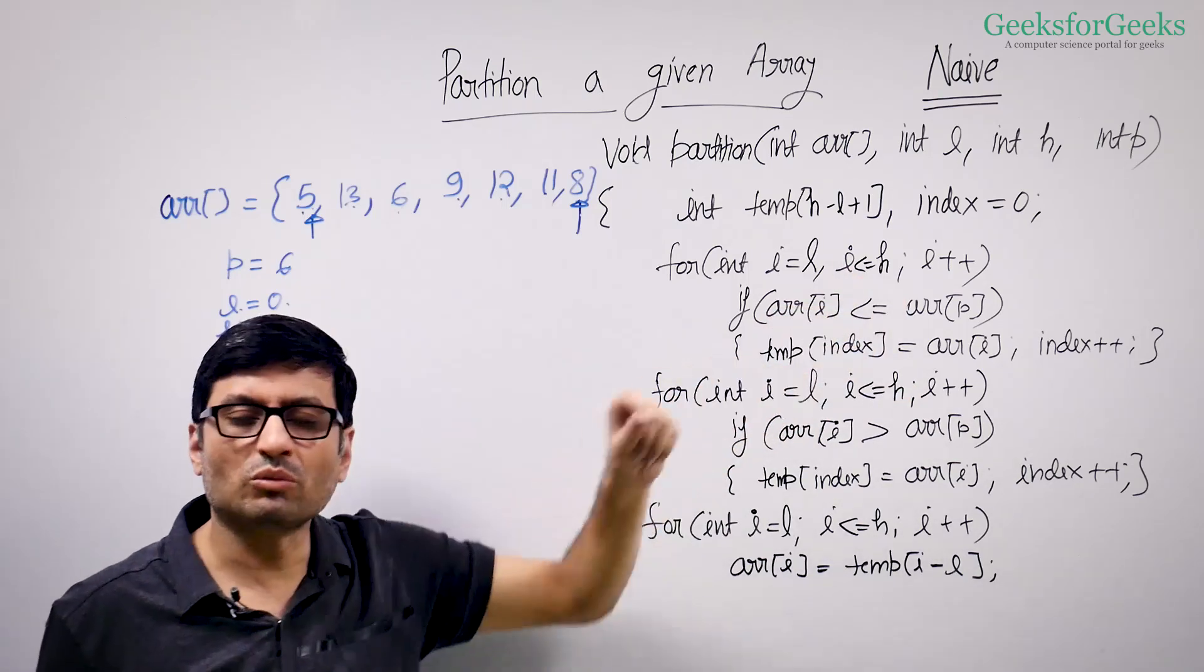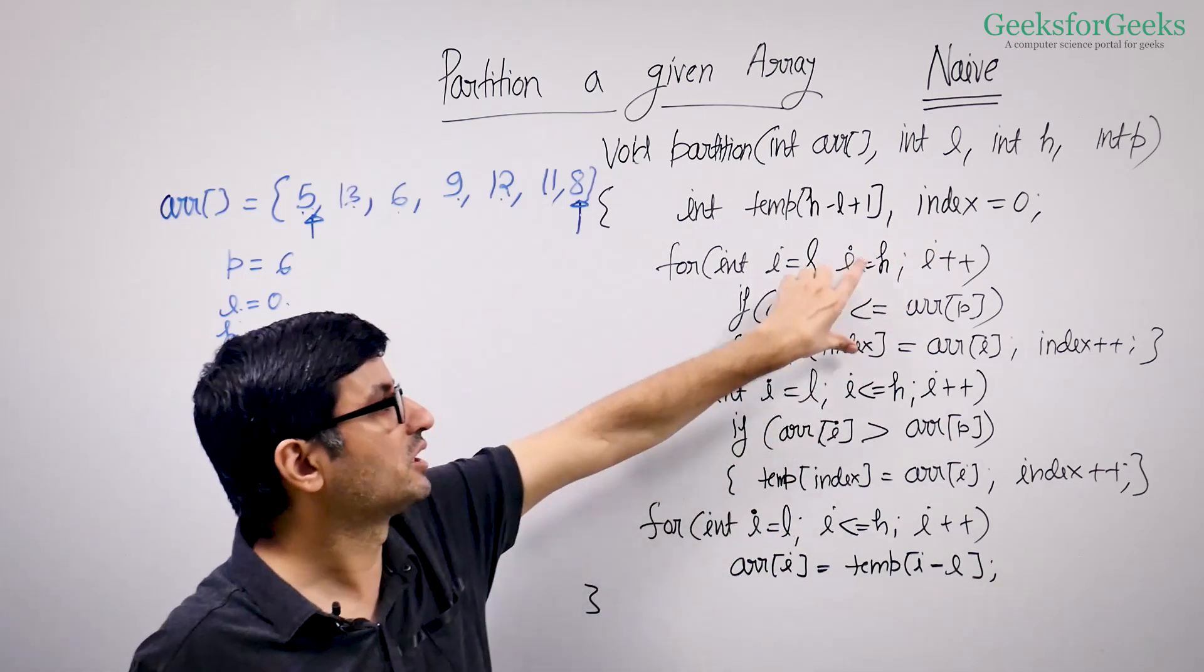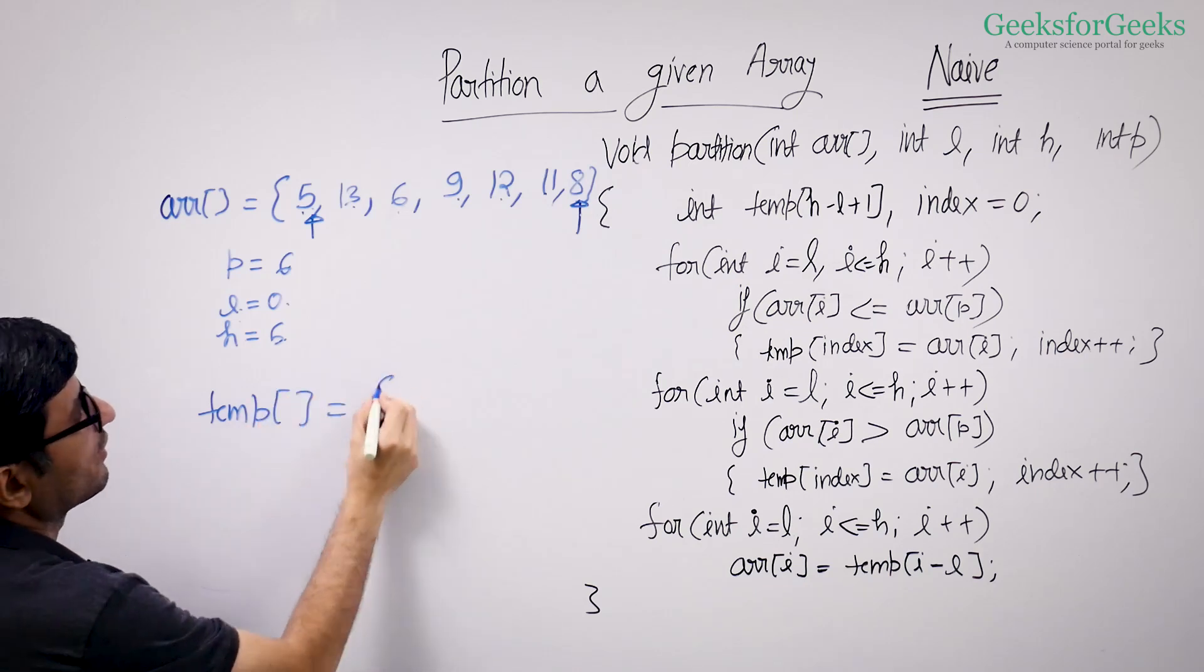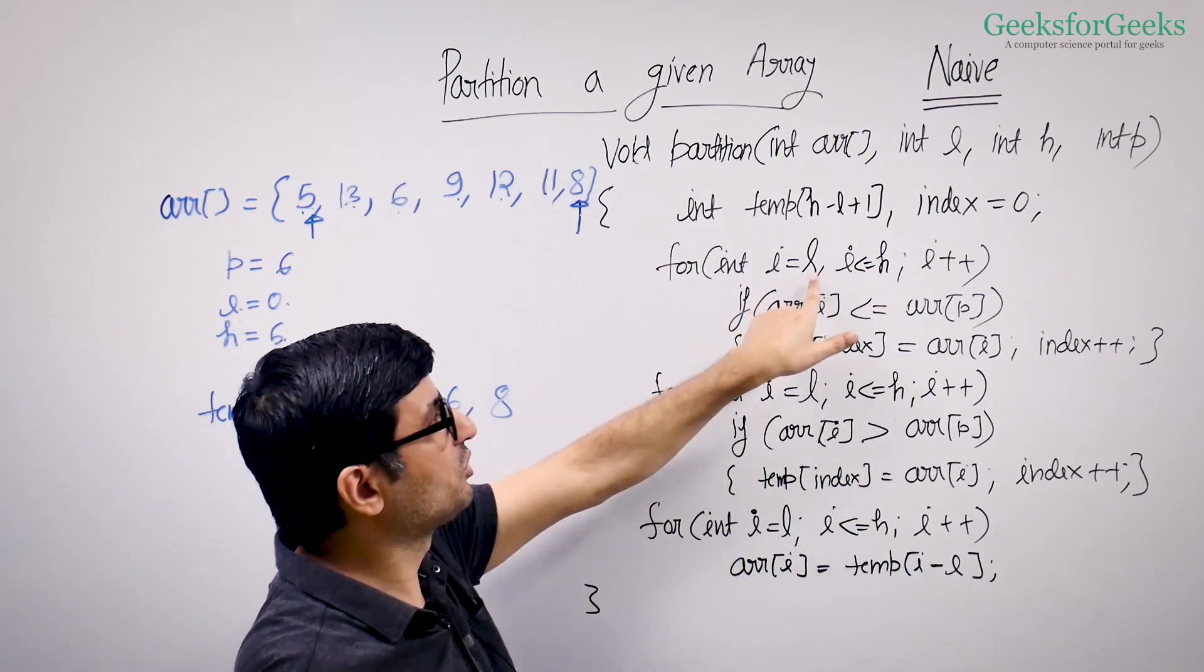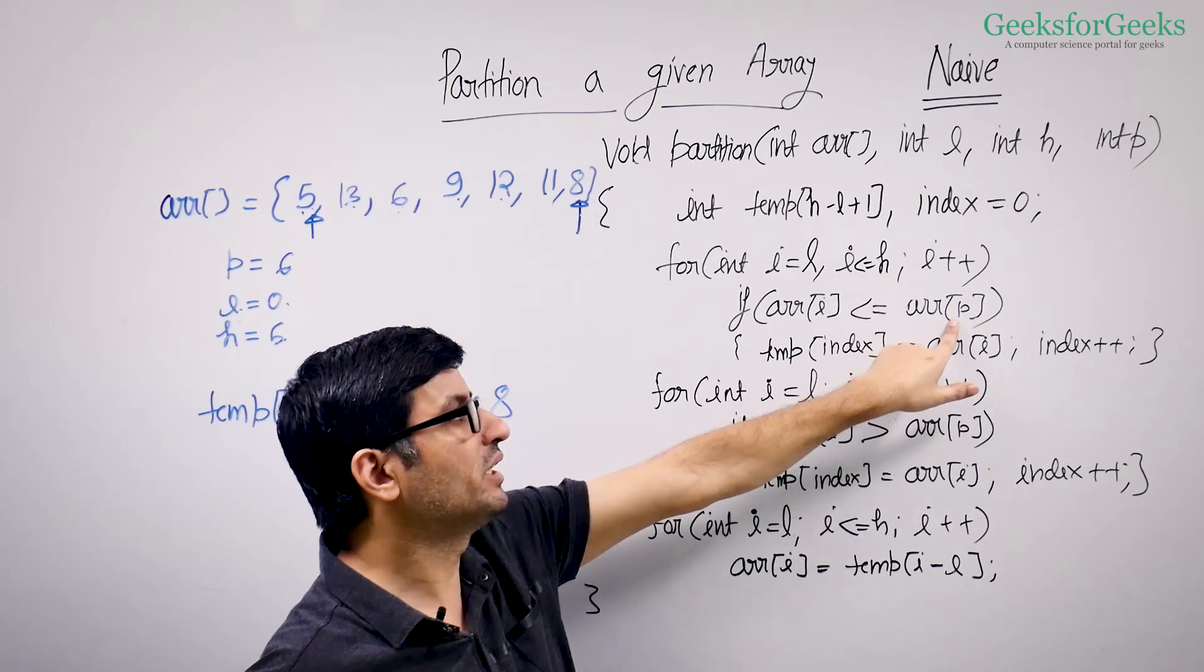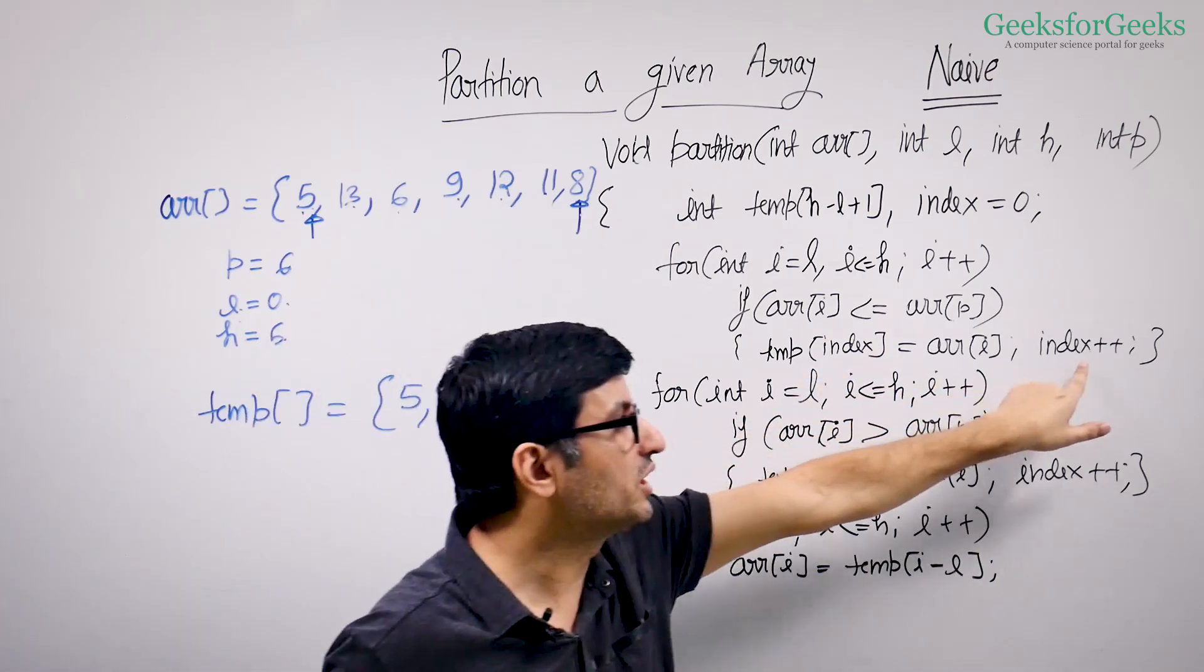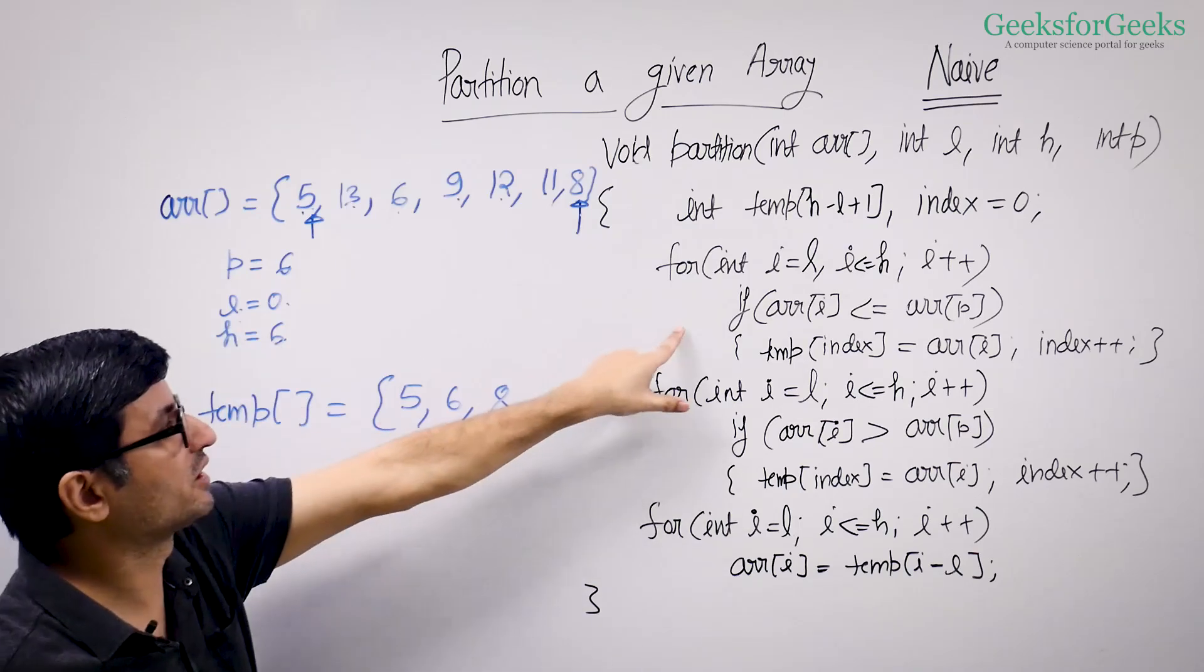First, you copy all the smaller or equal to elements into the temp array. So after this step, what will happen? Your temp array will contain 5, 6, and then 8. We traverse through the input array. For every element, we compare it with the pivot element or the element around which we want to partition. If it is smaller or equal to, we put it in the temporary array and we increment the index. So we have 5, 6, 8 after this step.